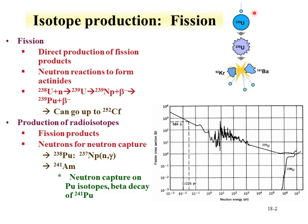An overview of the fission process is shown here, where uranium-235 encounters a neutron, forms an excited uranium-236 state, which undergoes fission releasing more neutrons that can induce further fission. The main driving factor is the large neutron capture cross-section of uranium-235, shown here as a function of neutron energy. Thermal neutrons have a large capture cross-section, while uranium-238 only starts showing significant neutron capture cross-section on the order of 1 MeV.